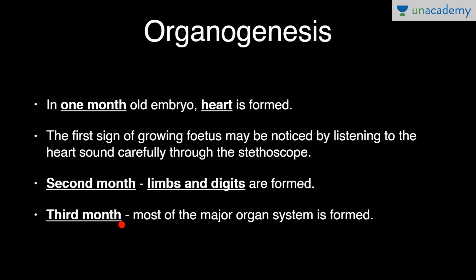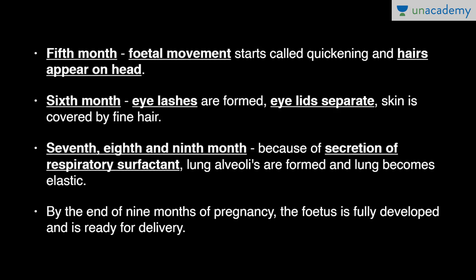In the third month, most of the major organ systems are formed. In the fifth month, fetal movement starts — that is called quickening — and hairs appear on the head. In the sixth month, eyelashes are formed, eyelids separate, and skin is covered by fine hair.